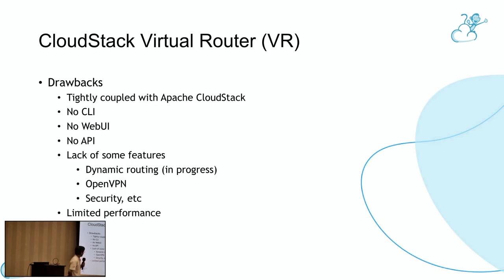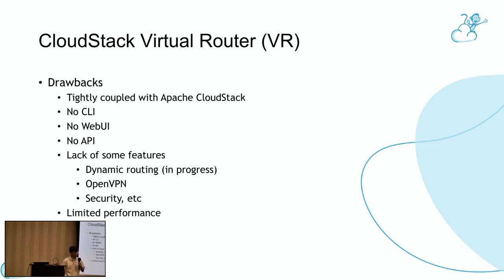It's tightly coupled with CloudStack — the virtual router is created from a Debian system template. Users have limited access to log into the virtual router to configure it manually. There's no command line, no web UI, and no API. Some features are not supported: for example, dynamic routing is in progress and will be available in the upcoming 4.20. Also, OpenVPN is not supported, there are no security rules in the VR, and performance is limited because it's created from the Debian system.